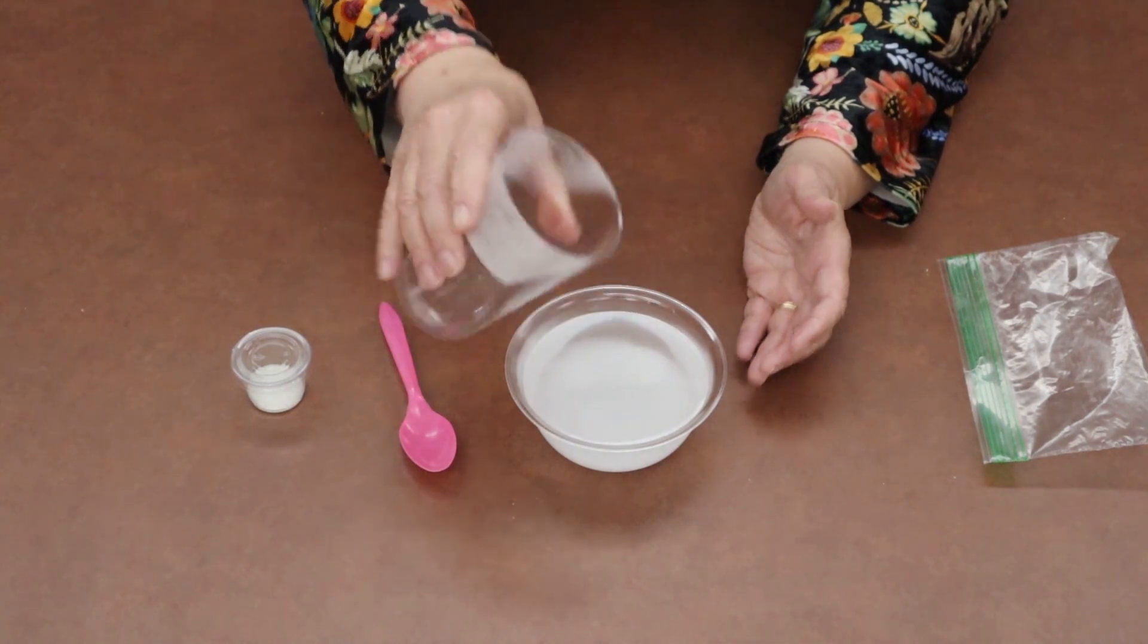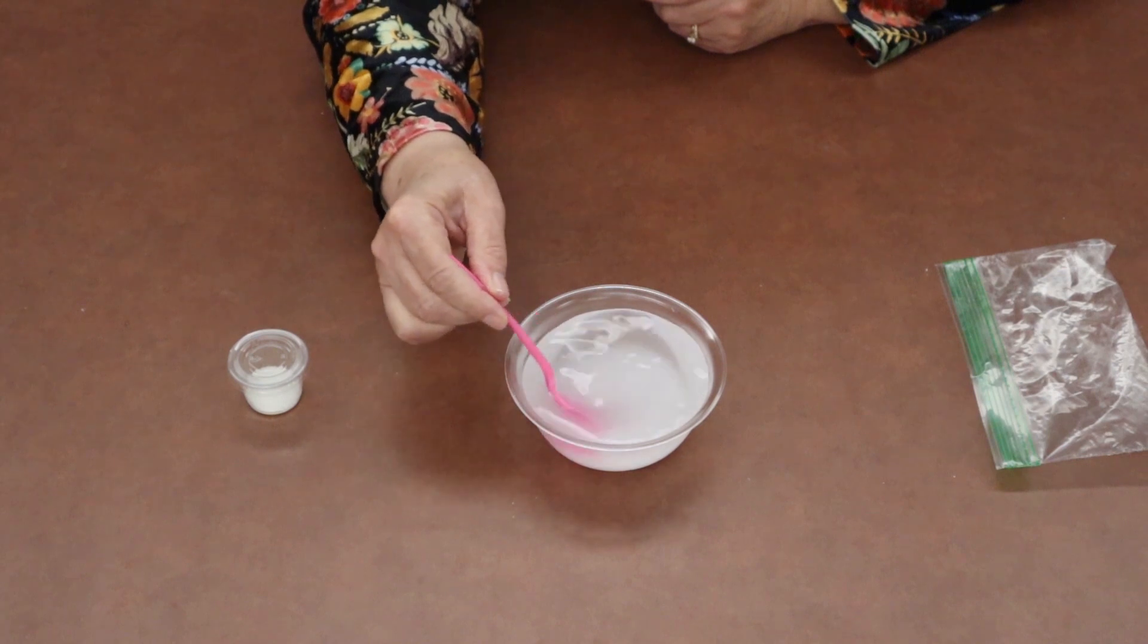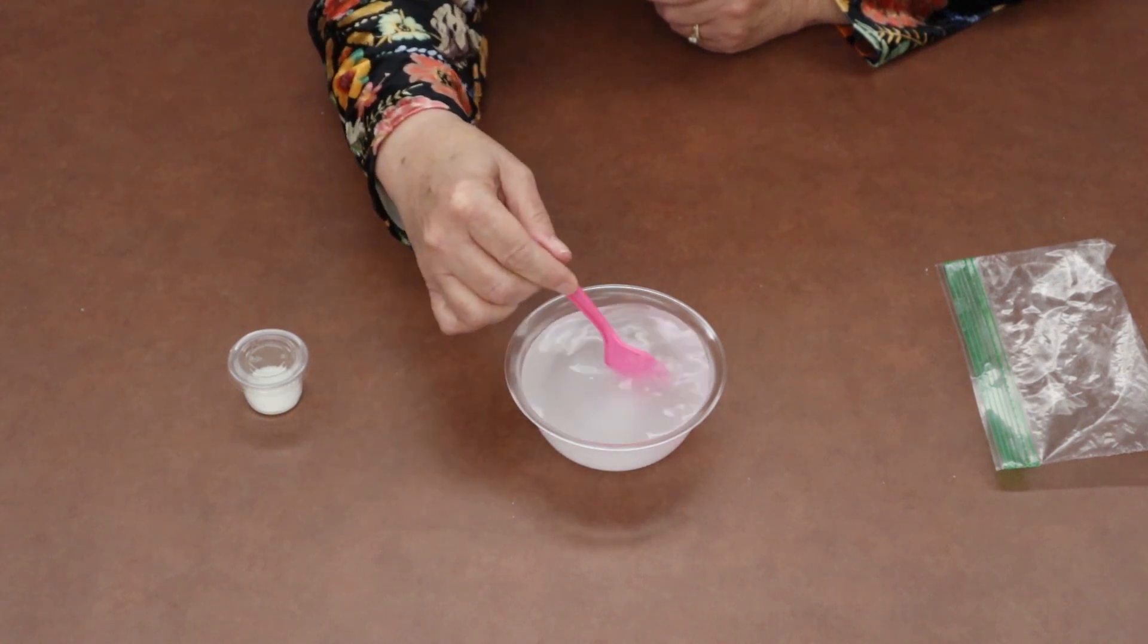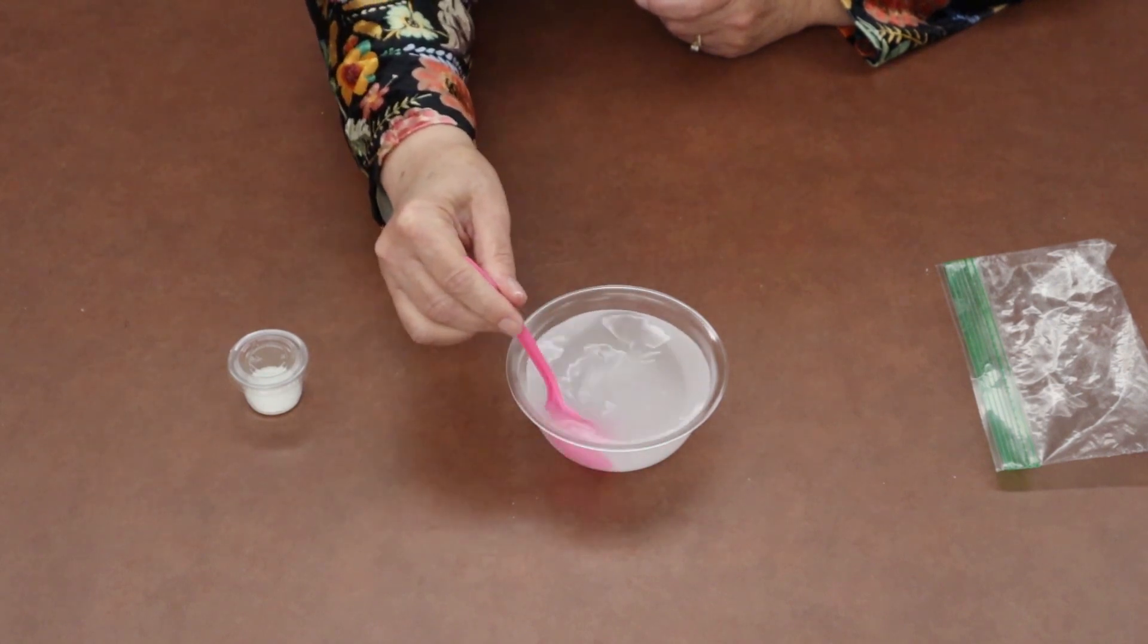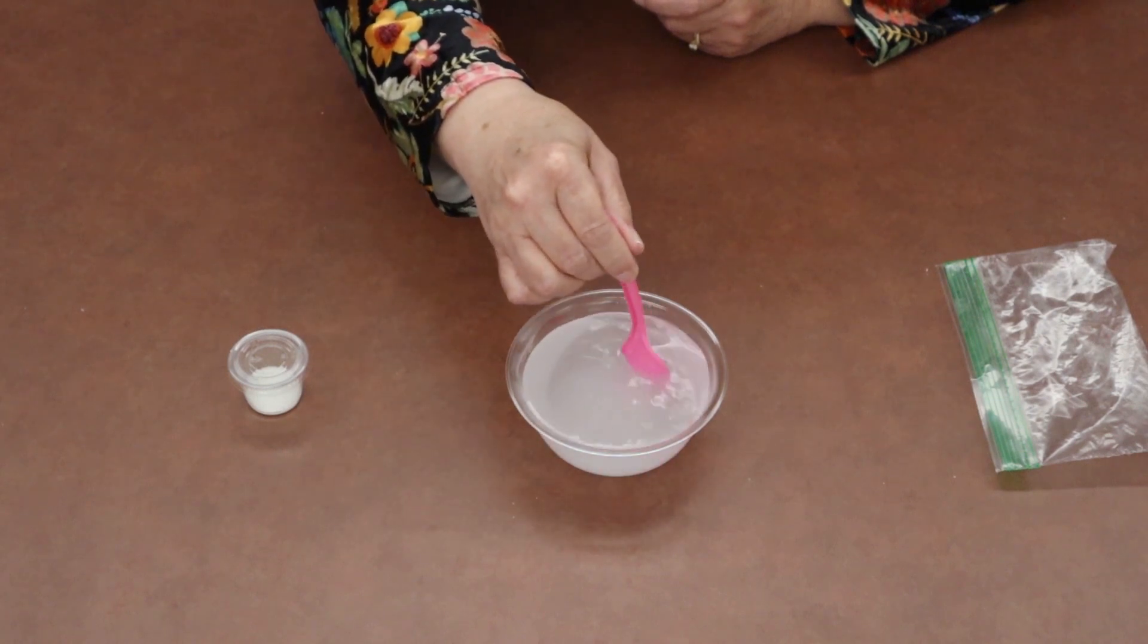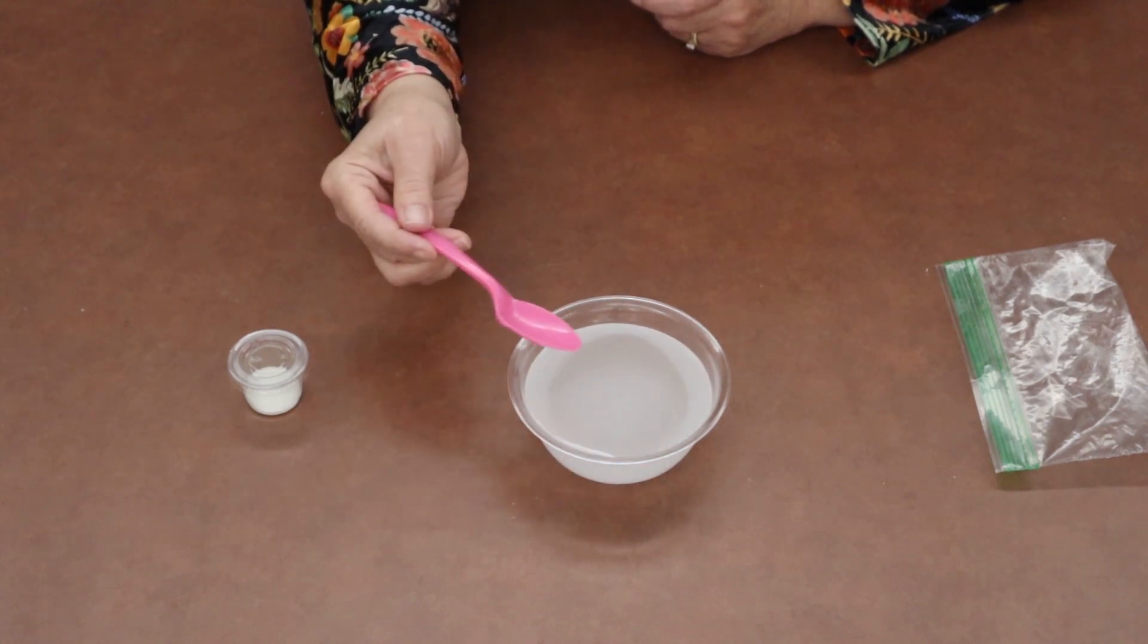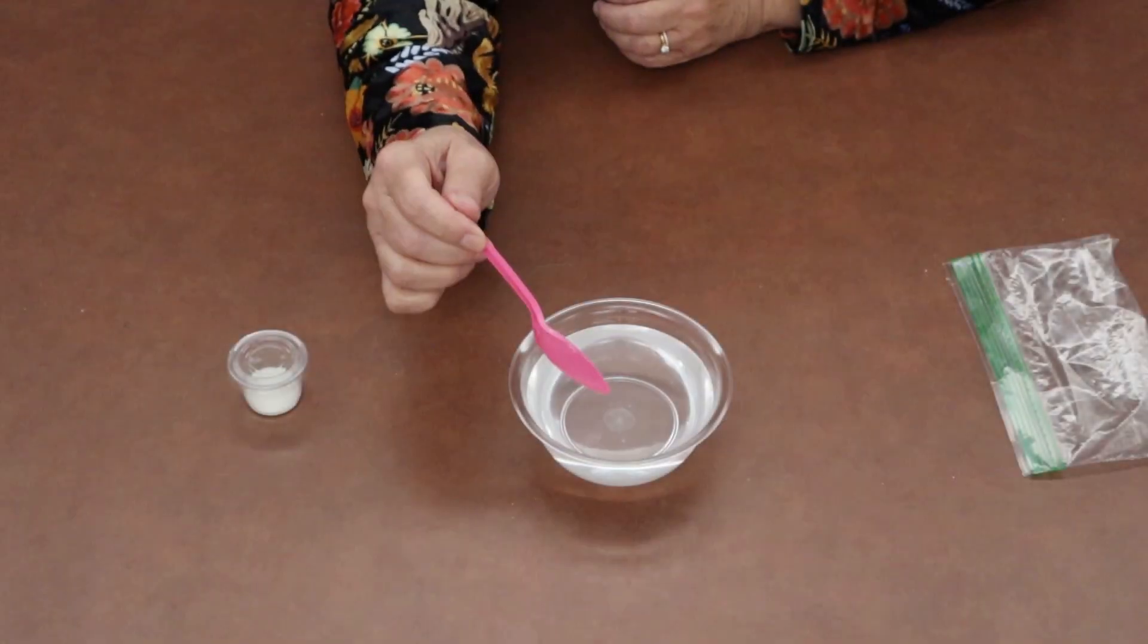The Epsom salt is going to start to dissolve. To help it dissolve, we are just going to take the spoon and stir. Keep stirring for one to two minutes until the Epsom salt is all dissolved.